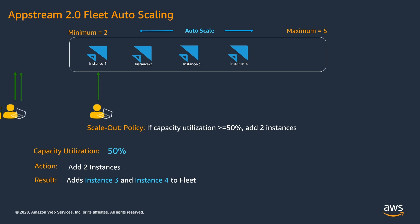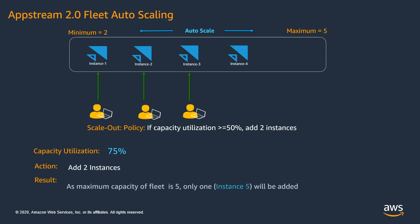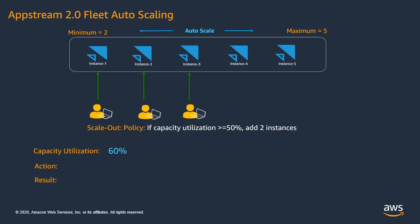Now let's say 2 more users initiated a connection to the fleet. The new capacity utilization is at 75%. This will again trigger the scale-out policy, which is supposed to add 2 more instances to the fleet. But since we defined the maximum fleet size to be 5 and it already has 4 instances, it will add only 1 instance to the fleet. You can see streaming instance 5 being added to the fleet. Now the new capacity utilization is at 60%. Though the scale-out policy triggers again, since the fleet is up to maximum capacity, no new instances will be added.